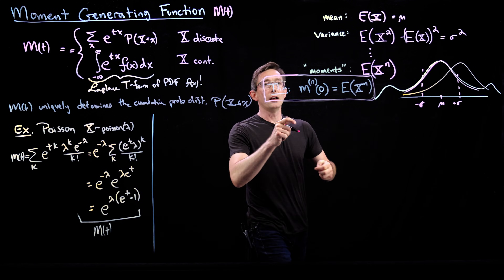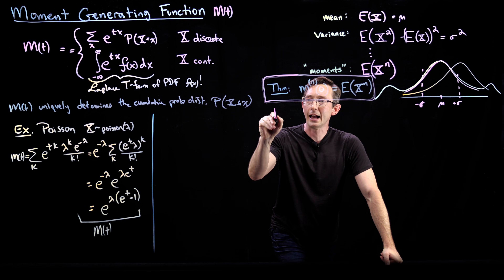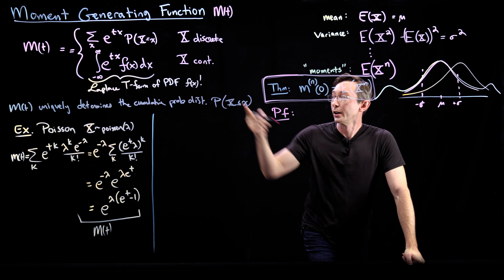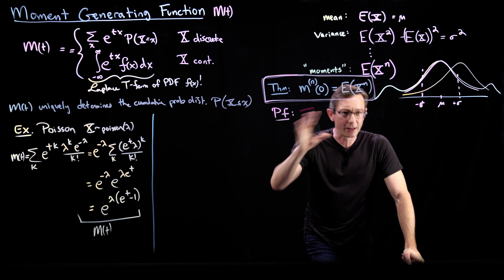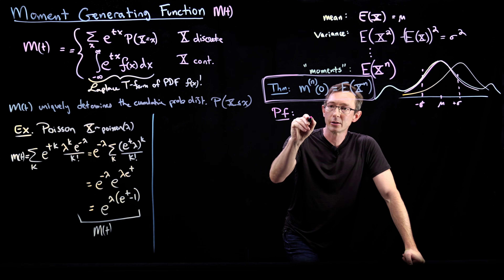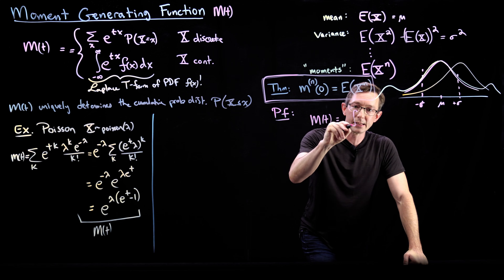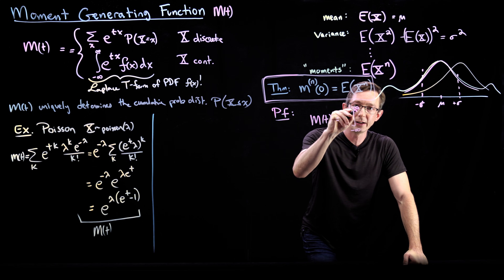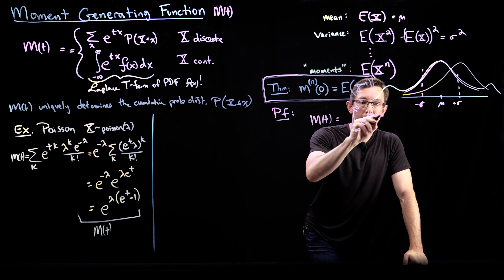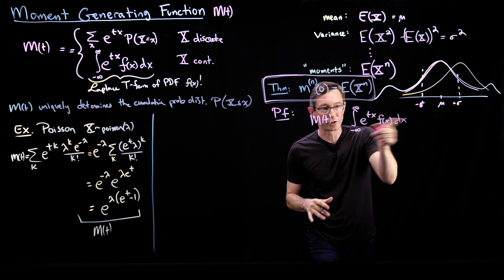The proof is pretty simple. What we're going to do is write down the moment-generating function — I'm going to write this down for continuous variables, though it is also true for discrete variables. So my moment-generating function m of t is just this integral from minus infinity to infinity of e to the tx, f of x dx. Nothing fancy here, this is just the definition.